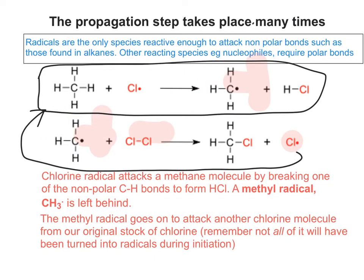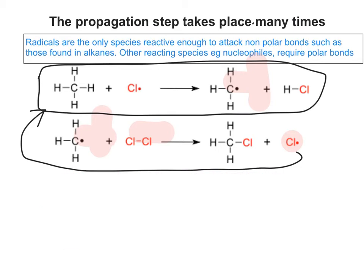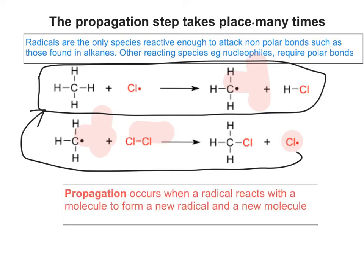In fact, it can happen many millions of times. So basically what happens in a propagation step is a radical reacts with a molecule to form a new radical and a new molecule.